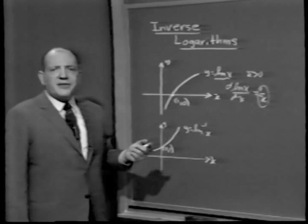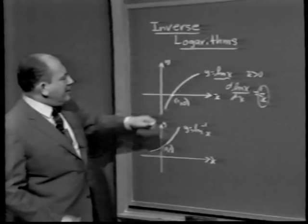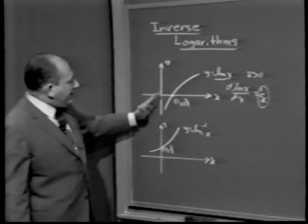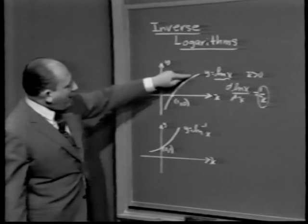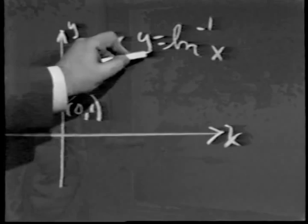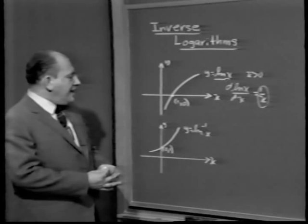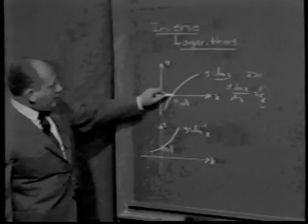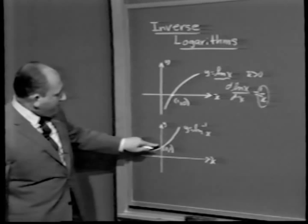So what we do now — remember how you invert this function. If you want to do this in slow motion, you first rotate through 90 degrees, then flip it over. Or if you want to do it faster, the inverse graph is the reflection of this curve with respect to the line y equals x. And we find that the graph of y equals inverse log x is this particular curve. Notice the correspondence: if (1, 0) is on the log curve, the inverse point is (0, 1). In other words, the inverse log of 0 is 1.